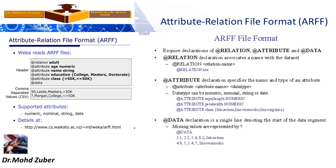The ARFF format contains three main parts. First, the @RELATION declaration — declaration associates a name with the dataset. Second, the @ATTRIBUTE declaration — specifies the name and types of an attribute. Third, the @DATA declaration — a single line denoting the start of the data segment. Supported attribute types in data include numerical, nominal, and string data. A link is provided where you can also see which types of attributes are supported in Weka tool.